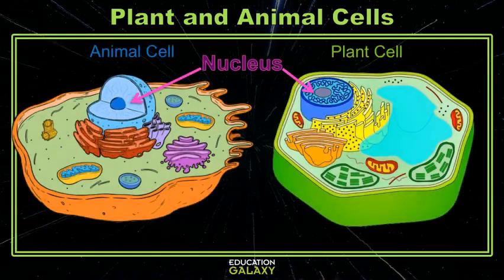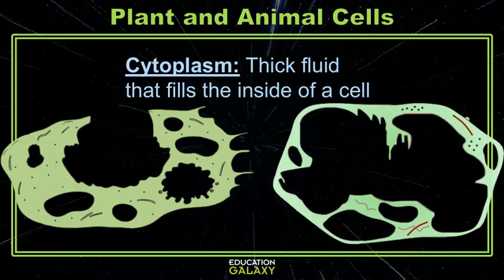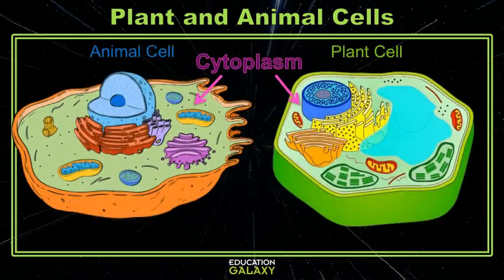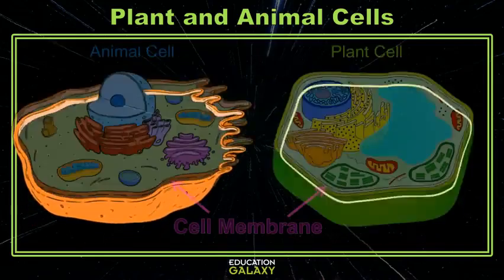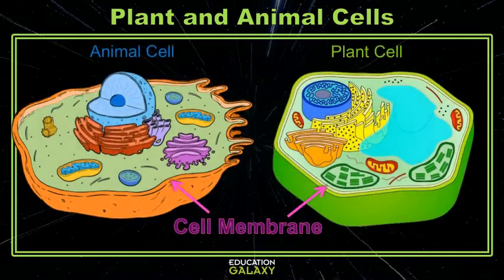Both plant and animal cells also have cytoplasm. Cytoplasm is a thick jelly-like fluid that fills the cell. It's made up of water, salts, and protein. The cytoplasm is held together by a cell membrane. The cell membrane is a barrier that holds the cell together, and acts like a door to allow things to enter or leave the cell.